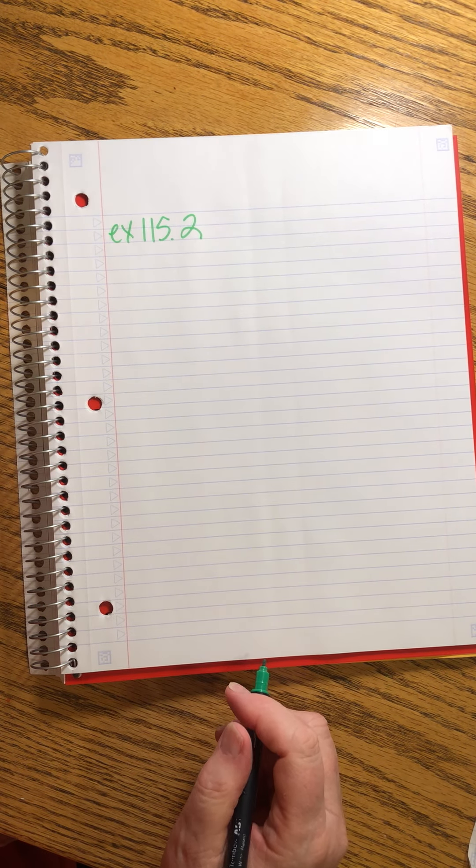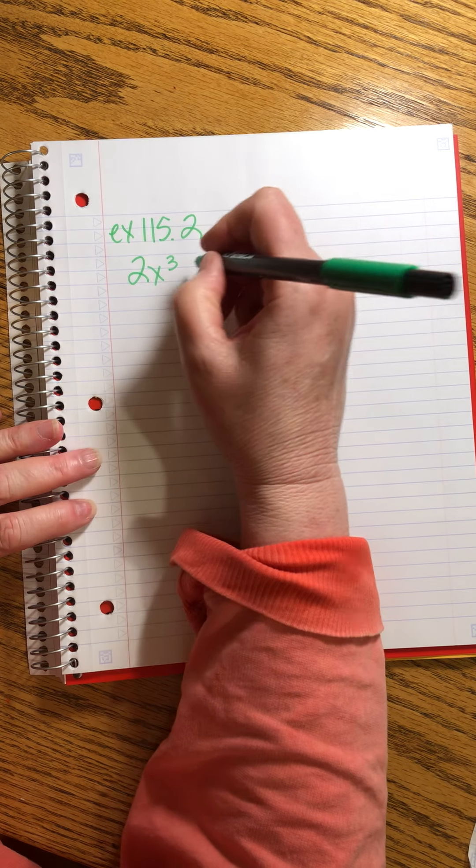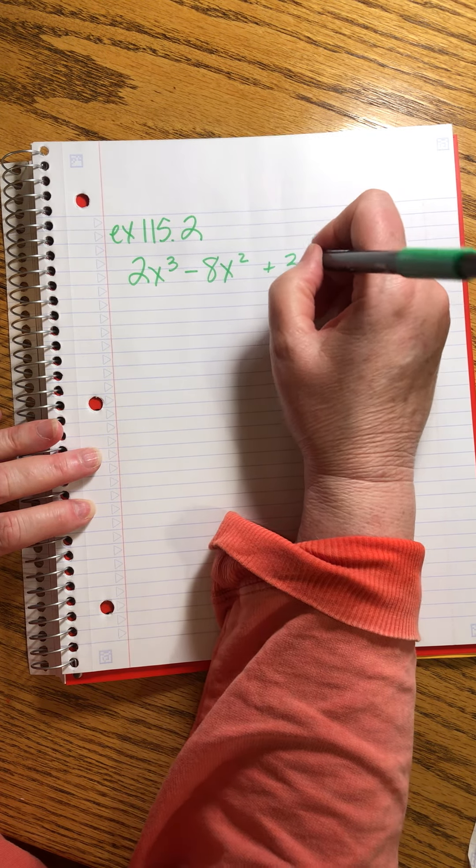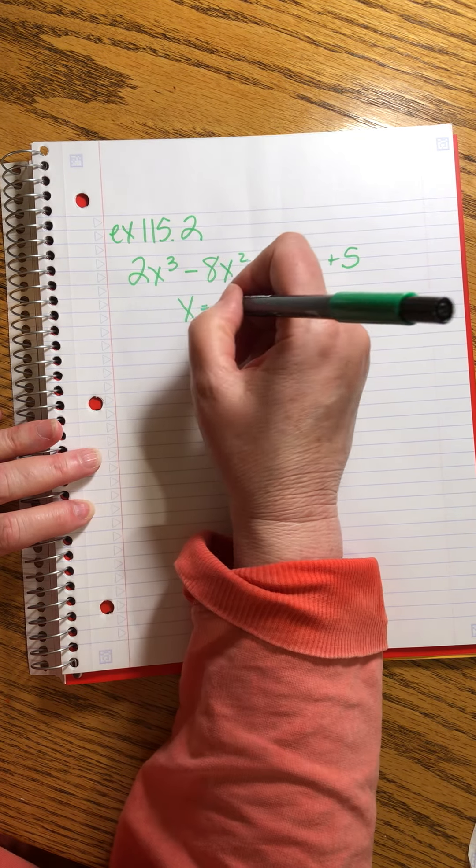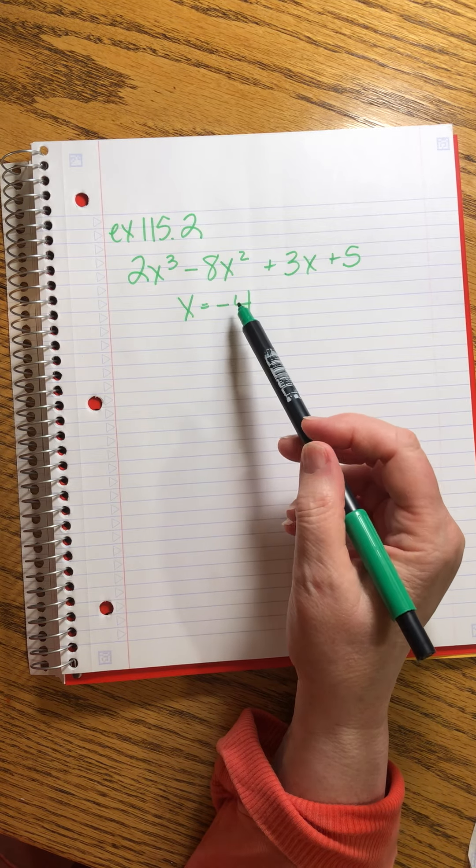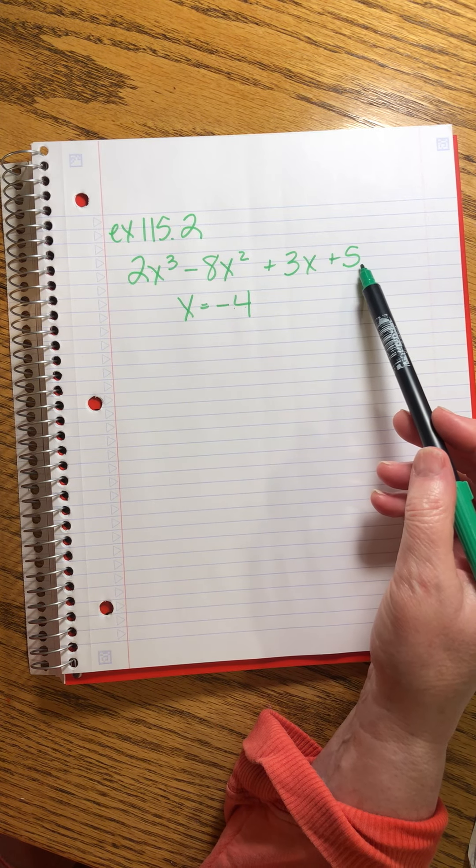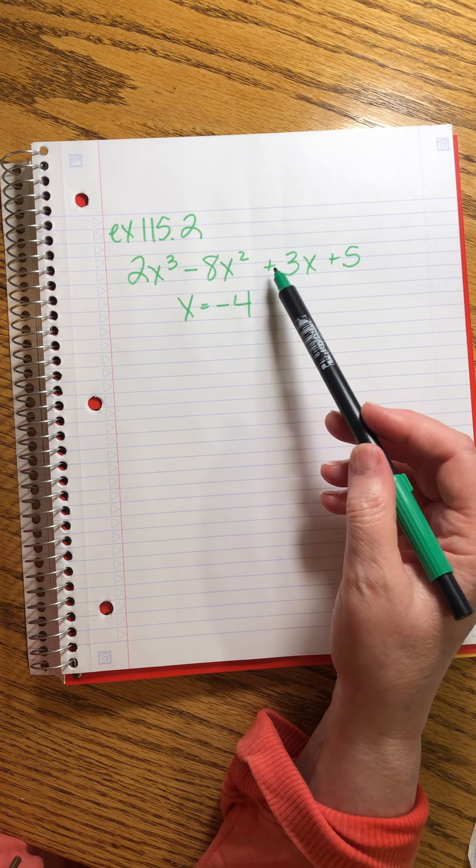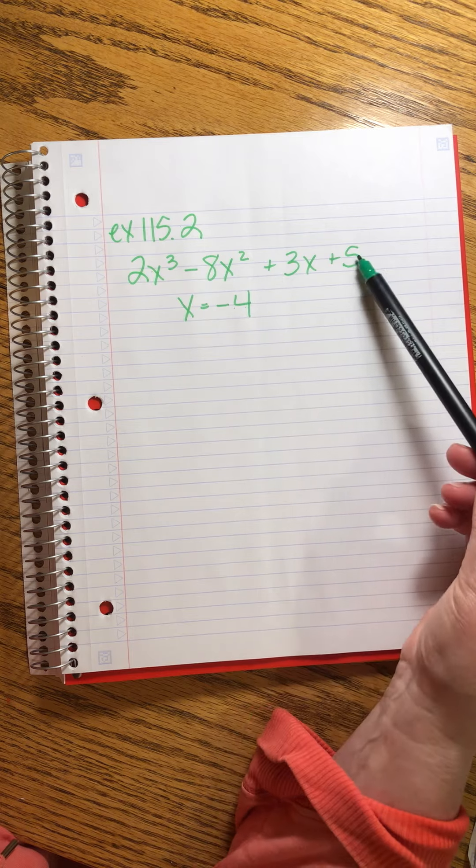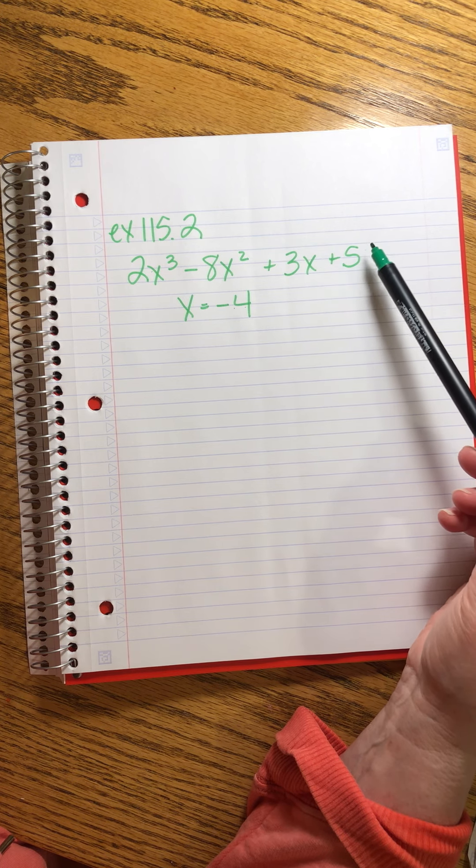All right, use the remainder theorem to evaluate 2x³ - 8x² + 3x + 5 when x equals minus 4. So we're not even using function language at this time. They're just telling us plug minus 4 in to all of this. We know we could do that, but that looks like a big long hairy calculation. What we're going to do instead of that is we're going to divide this thing by this.